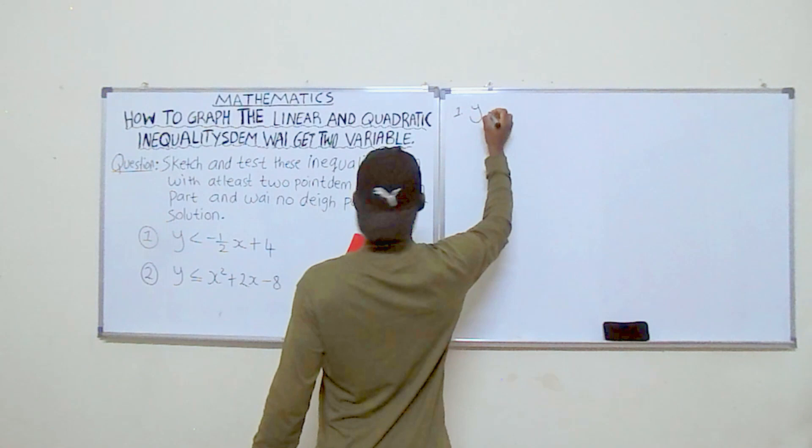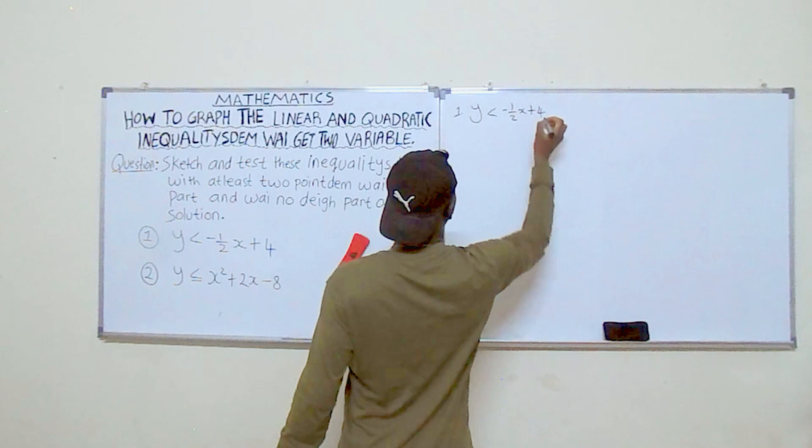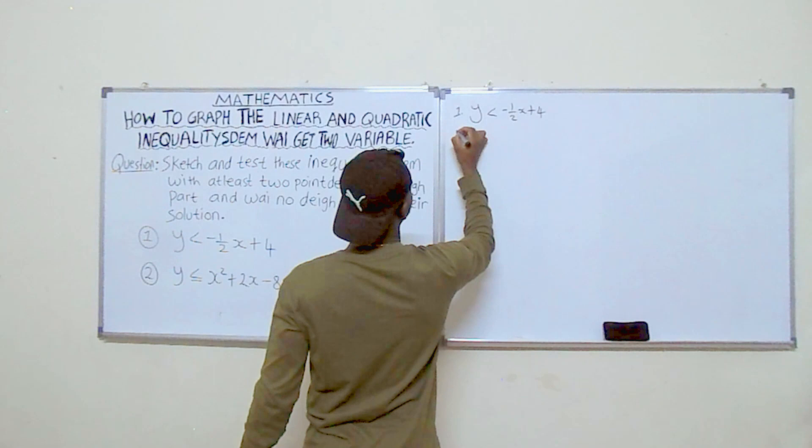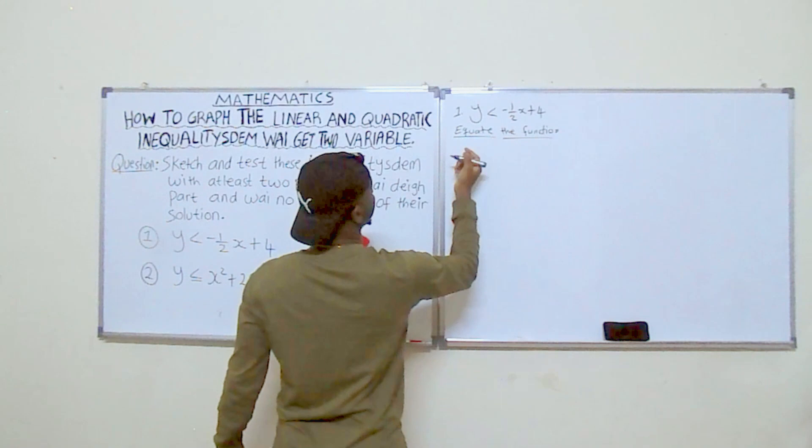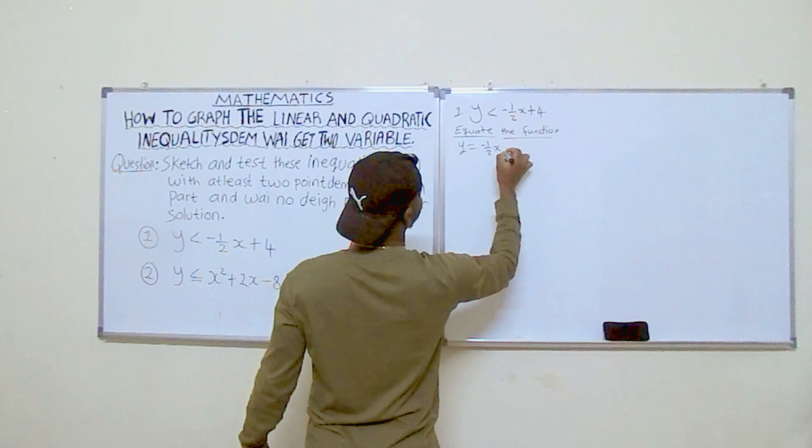The first thing we'll do is equate this function. If we do so we get y equals negative one-half x plus four. Now we'll find our y-intercept.